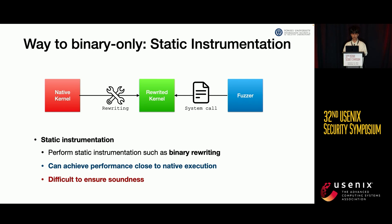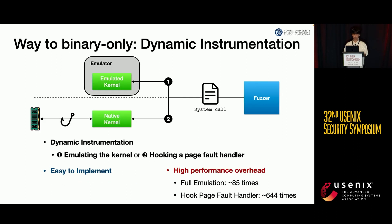There are two methods of binary instrumentation: static and dynamic. Static instrumentation implements KASAN through binary rewriting and can perform close to native execution speed. Unfortunately, guaranteeing soundness is challenging, which makes it hard to apply to kernels. The other option is dynamic instrumentation. Previous researchers implement KASAN by emulating the kernel or hooking the page fault handler. These methods are easy to implement and can be applied to closed-source OSes, but their extremely high overhead makes them difficult to use in practice.